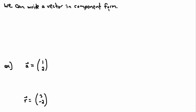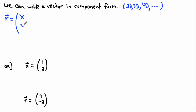We also have something called component form. This is how we formally write a vector. We can do this in 2D, 3D, 4D, or any number of dimensions — that's the beauty of this notation. The way we normally write it: for vector R in two dimensions, we write it as (x, y), where the first number represents the x-dimension and the second represents the y. This is the x-component and that's the y-component.